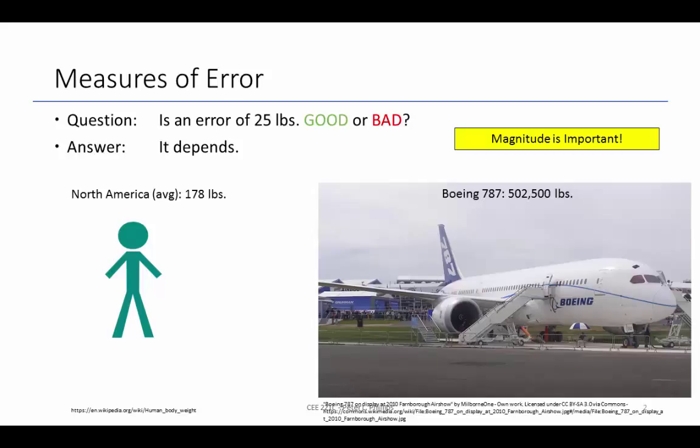So an example here is the average North American person weighs 178 pounds. So is an error of 25 pounds on that measurement good or bad? What about a large airplane, a Boeing 787? It weighs about a half million pounds. So 25 pounds on half a million, good or bad? It depends, right?